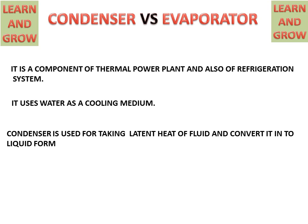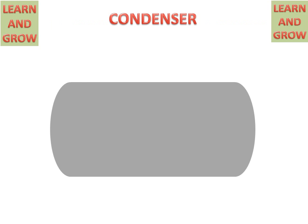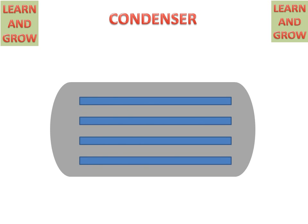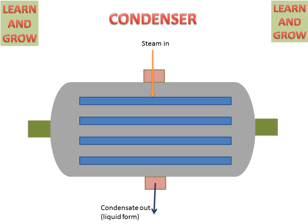Now we will see the working and parts of the condenser. We have a chamber in which there are water tubes through which water will be flowing. These are the valves. For steam in, steam will enter from the upper side and condensate will exit from the lower side in liquid form. From the left-hand side, there will be coolant in — the coolant is water, which will flow through these tubes.